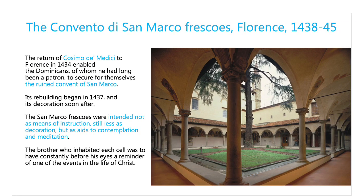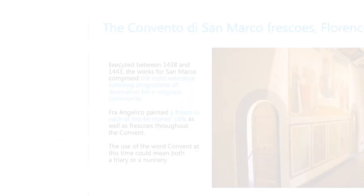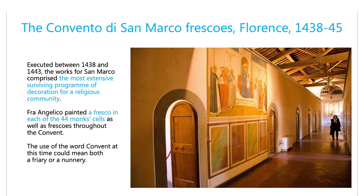San Marco was a convent full of monks' cells — a very devout place. You can go and visit it today; it's a beautiful place to visit. Cosimo de' Medici was the patron behind Fra Angelico painting in all these monks' cells, so the monks would have a religious image to look at every day. Of course, the Medici were the ruling family of Florence — without whom I don't know how much of the Renaissance would have happened. They were the most incredible patrons. This is the interior of San Marco — there were 44 monks' cells, and you can see the doors along the corridor.